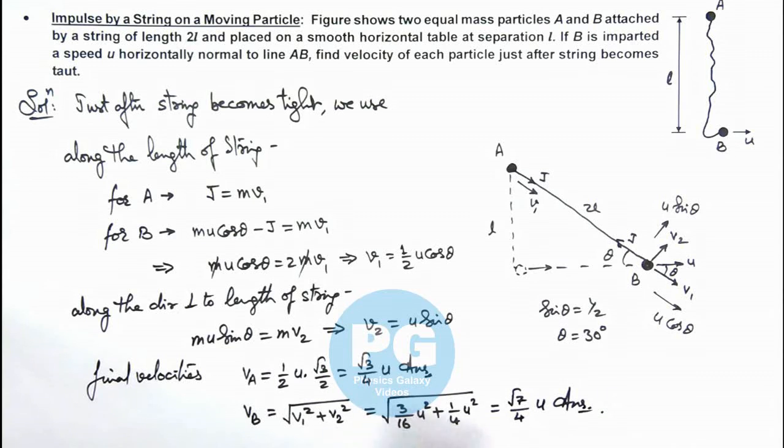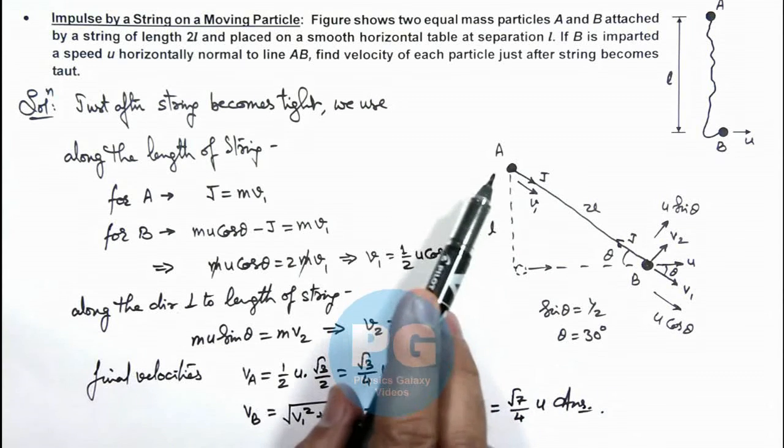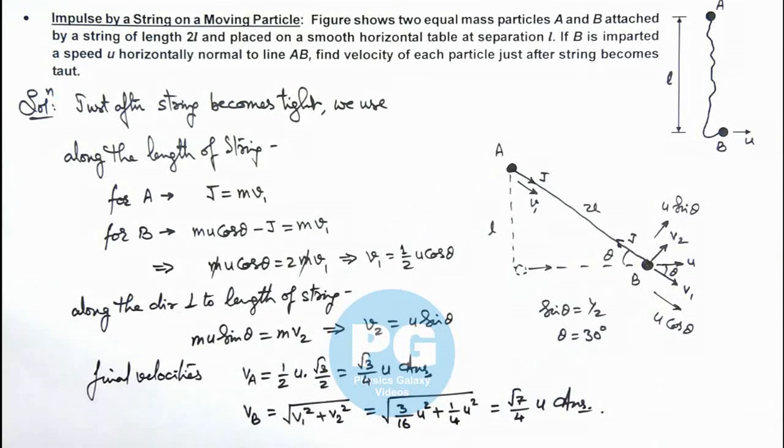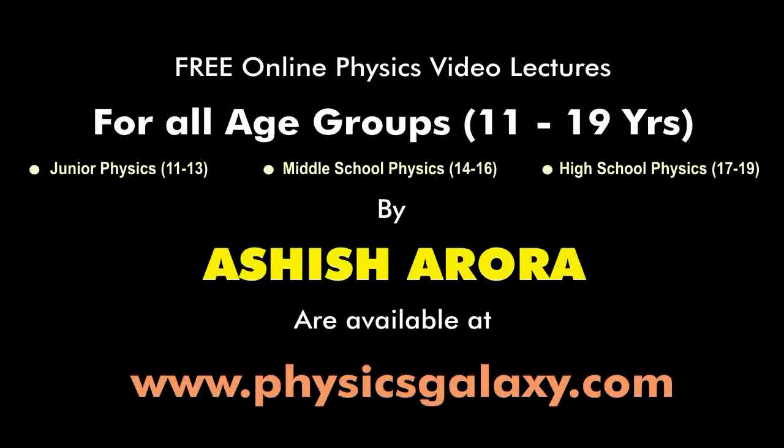So these are the velocities of balls, the particles A and B, just after string becomes tight.